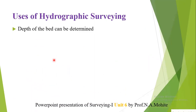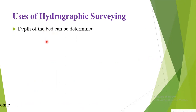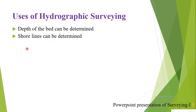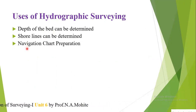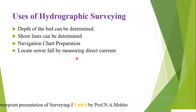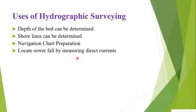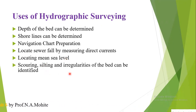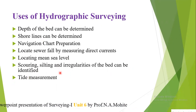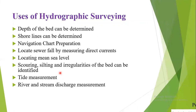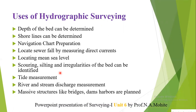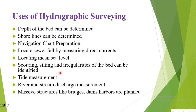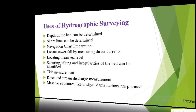The uses of hydrographic surveying include: determining the depth of the bed, determining shorelines, preparing navigation charts, measuring direct currents to look at sewer fall, locating mean sea level, identifying scouring, silting and irregularities of the bed, tide measurement, river and stream discharge measurement, and planning massive structures like bridges, dams, and harbors.